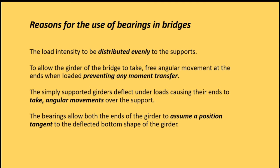Reasons for the use of bearings in bridges: the load intensity is to be distributed evenly to the supports; to allow the girder of the bridge to take free angular movement at the ends when loaded, preventing any moment transfer. The simply supported girders deflect under loads causing their ends to take angular movements over the support. The bearings allow both ends of the girder to assume a position tangent to the deflected bottom shape of the girder.